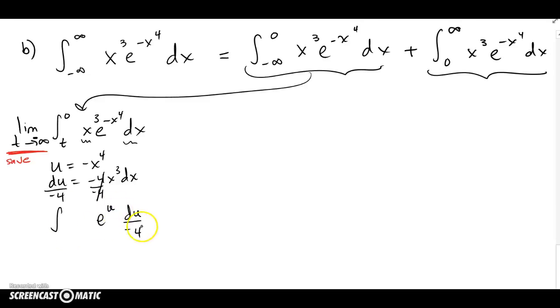So I got my e^u and my du over 4 or -4. Let's change our limits of integration. You don't have to. You can bring them back at the end, but I'll go ahead and change it. The bottom limit, if u is -x^4 and x happened to be t. If I put t in here, I get -t^4 for the bottom limit. And for the top limit, if x was 0 and I put 0 for x, I get u equals 0, I guess.